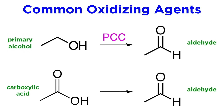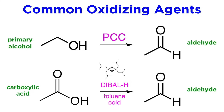Aldehydes can also be produced by reduction of a carboxylic acid, but certain special reagents are required. One such reagent is diisobutylaluminum hydride, or DIBAL-H. This is typically carried out at cold temperatures in toluene.